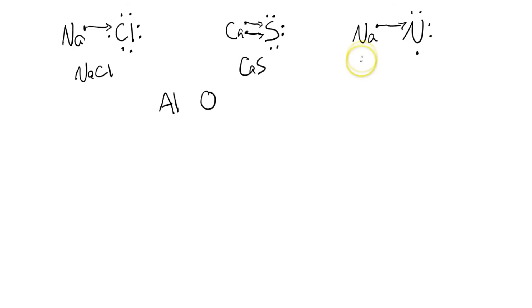So what do we do? We bring in another sodium with its 1 valence electron, and we bring that on over there. Now sodium again is happy, but nitrogen still isn't because it's not completely full.